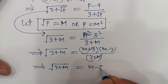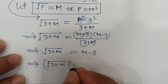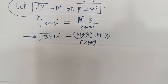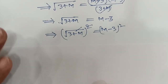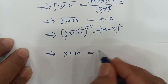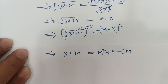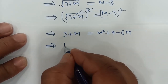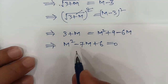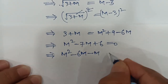This implies square root of (3 plus m) equals m minus 3. Squaring both sides, the square root cancels: 3 plus m equals (m minus 3) squared. Expanding using (a minus b) squared equals a squared plus b squared minus 2ab, we get 3 plus m equals m squared plus 9 minus 6m. Rearranging, we get the quadratic equation m squared minus 7m plus 6 equals 0.